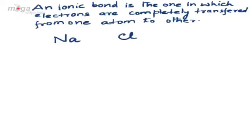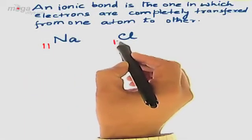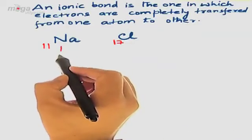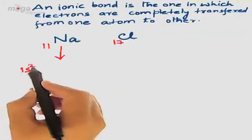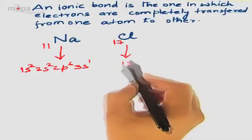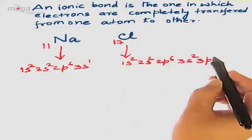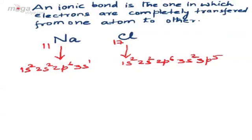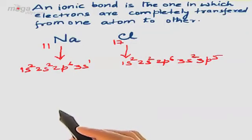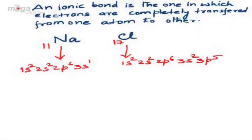Let us start with sodium, which has atomic number 11, and chlorine, which has atomic number 17. The electronic configuration of sodium is 1S², 2S², 2P⁶, 3S¹, while for chlorine it is 1S², 2S², 2P⁶, 3S², 3P⁵. So for sodium we have 1S², 2S², 2P⁶, 3S¹, while for chlorine we have 1S², 2S², 2P⁶, 3S², 3P⁵. Now let us look at the valence shell — the outer shell electronic configuration of both sodium and chlorine.